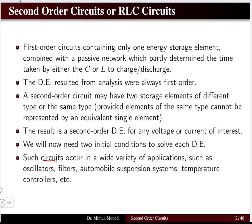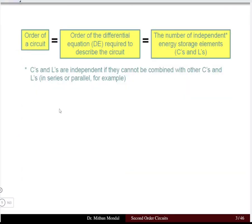Second order circuits are used in a wide variety of applications, for example oscillators, filters, automobile suspension systems, temperature controllers, and more. The order of a circuit is basically the order of the differential equation describing that circuit, governed by the number of independent energy storage elements — capacitors or inductors — present in the circuit.